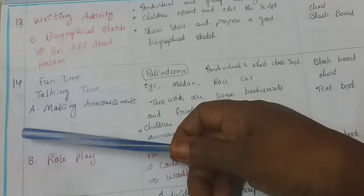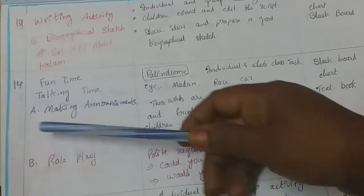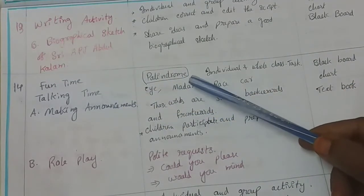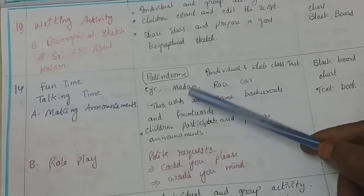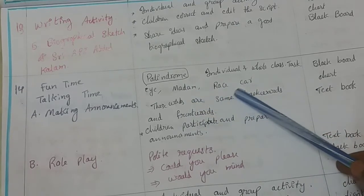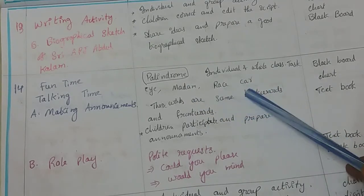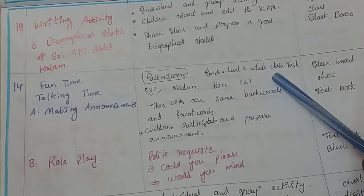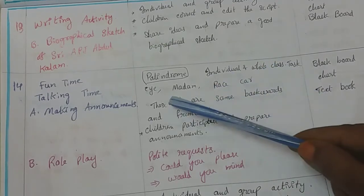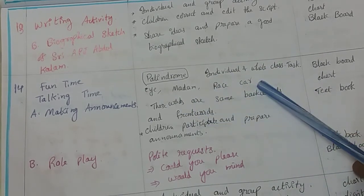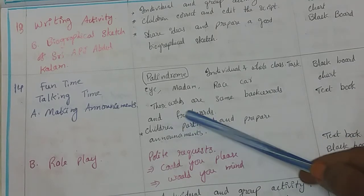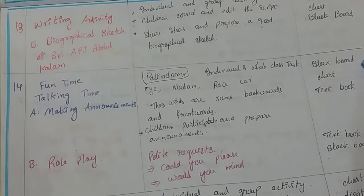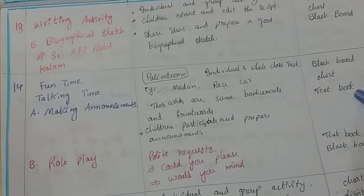In period 14, it is fun time and talking time. For fun time, we have palindromes — words that read the same forwards and backwards — for example, I, madam, race car, etc. It is an individual and whole class task. We give the definition and students identify such words. TLM: blackboard, chart and textbooks.